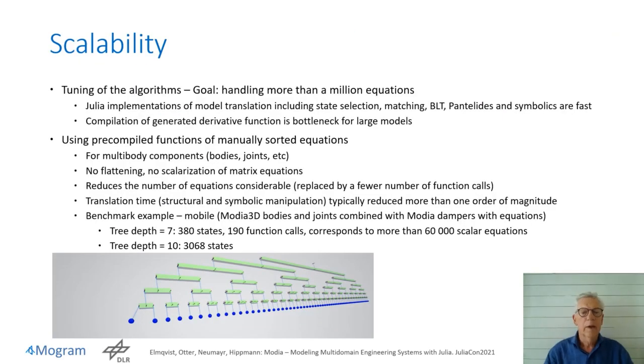We have put emphasis on scalability recently. We want to be able to handle more than 1 million equations, and Julia is fast for model translations. The compilation of the generated derivative function is a bottleneck for large models. Andrea showed how we use pre-compiled functions for multi-body models. This reduces the number of equations a lot, which results in reduced translation time by typically more than one order of magnitude.